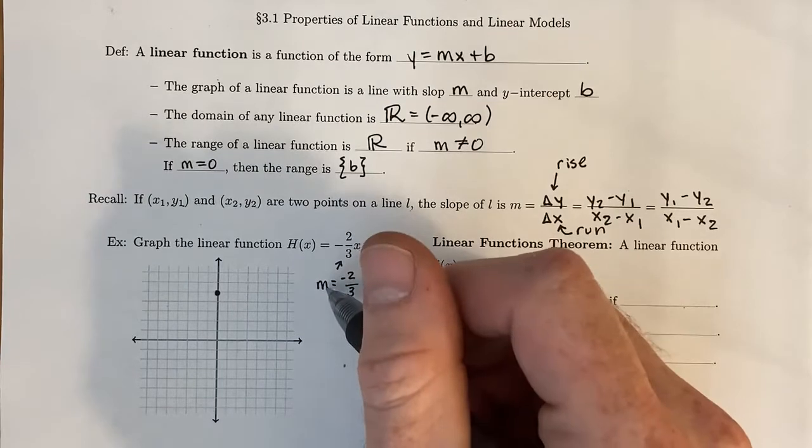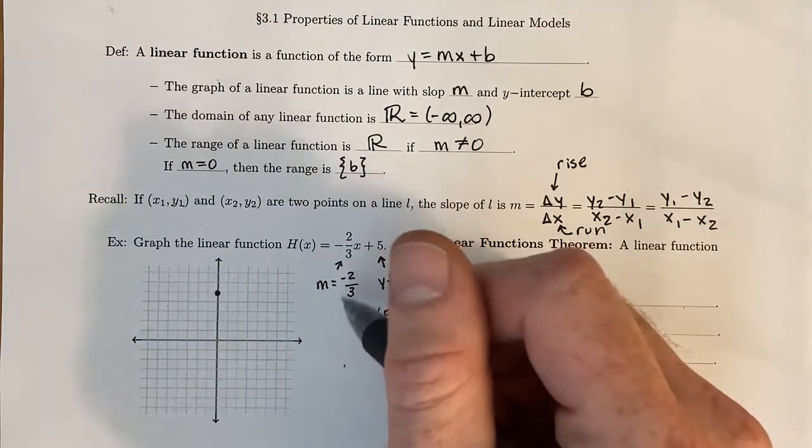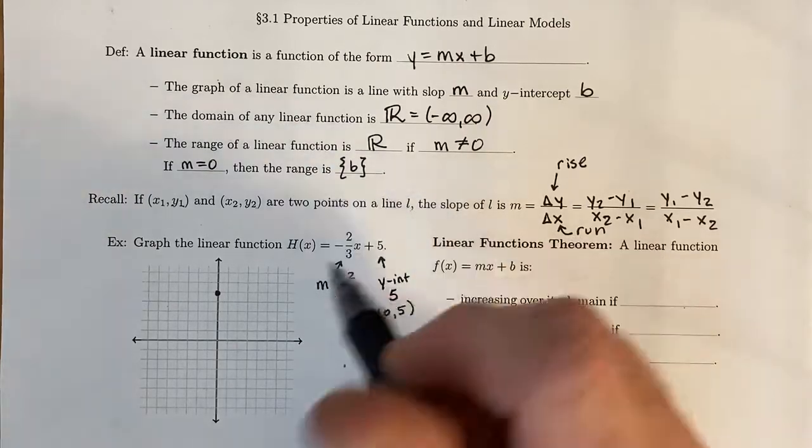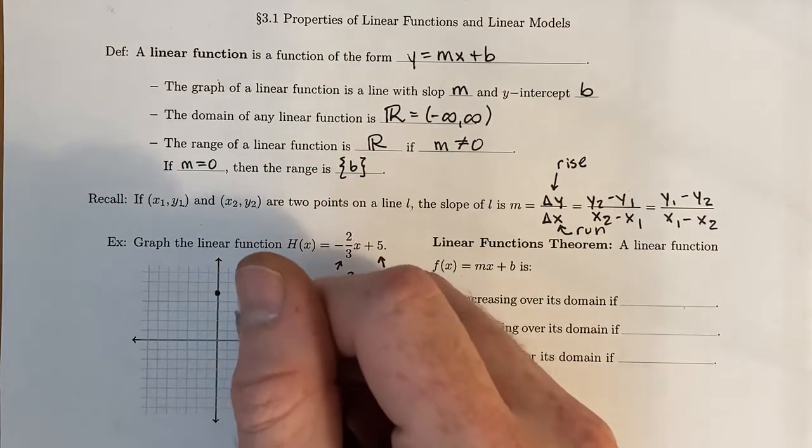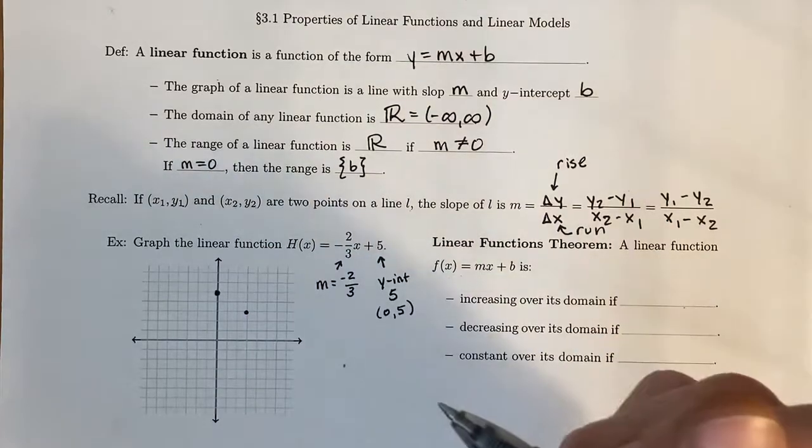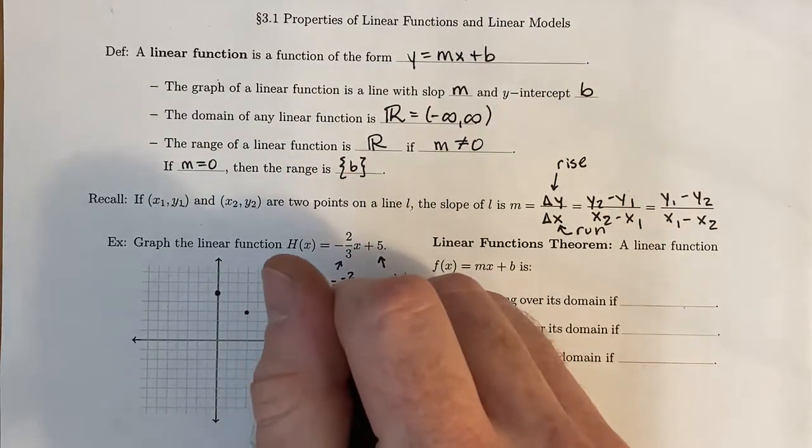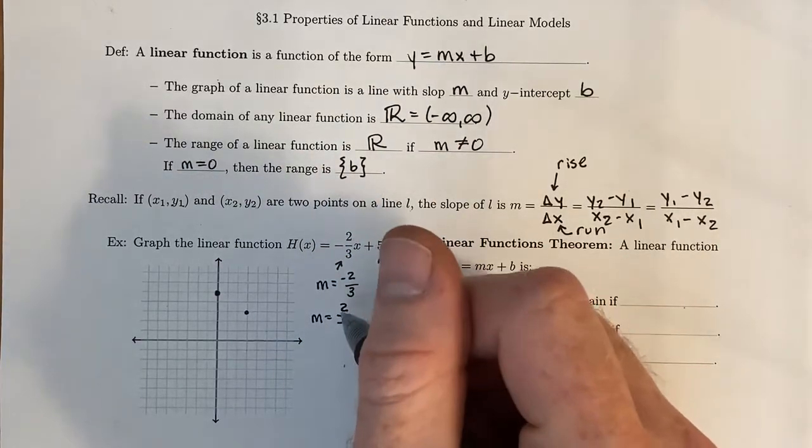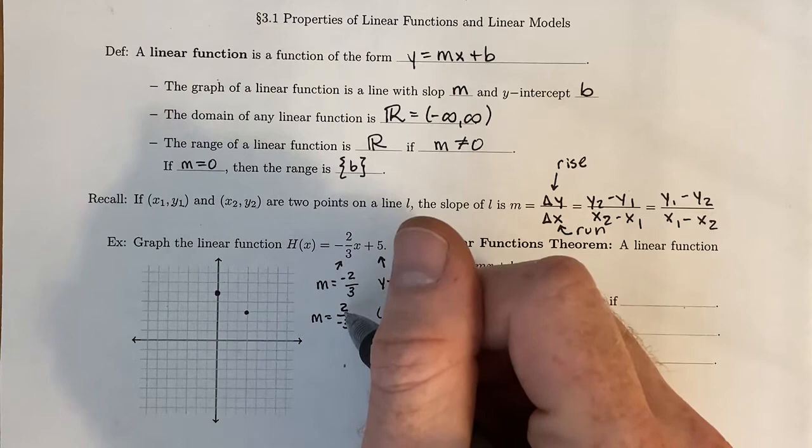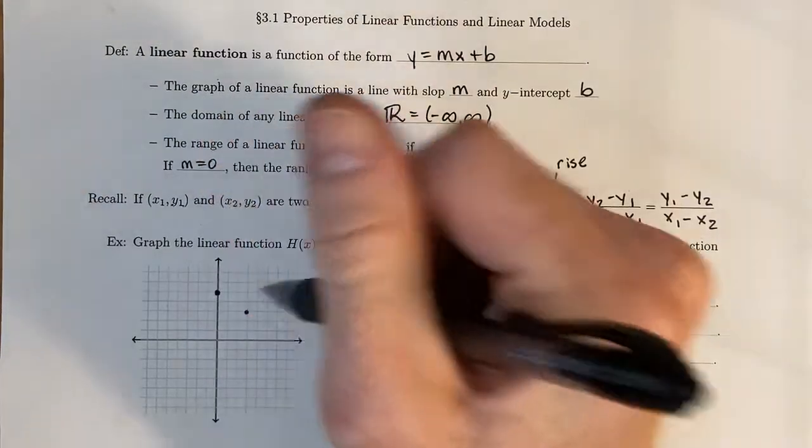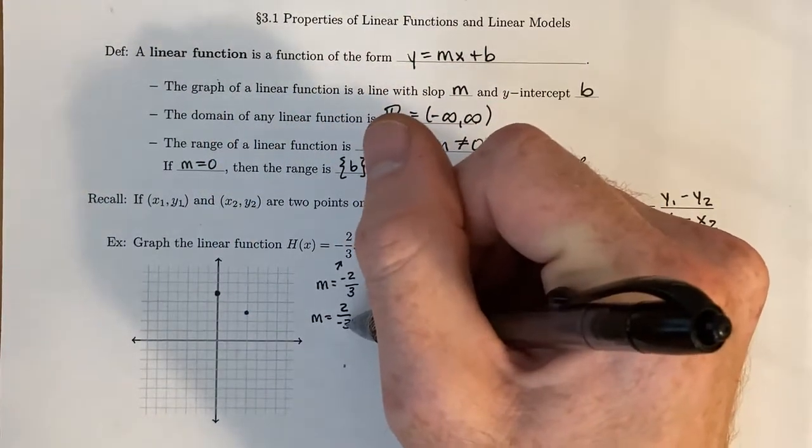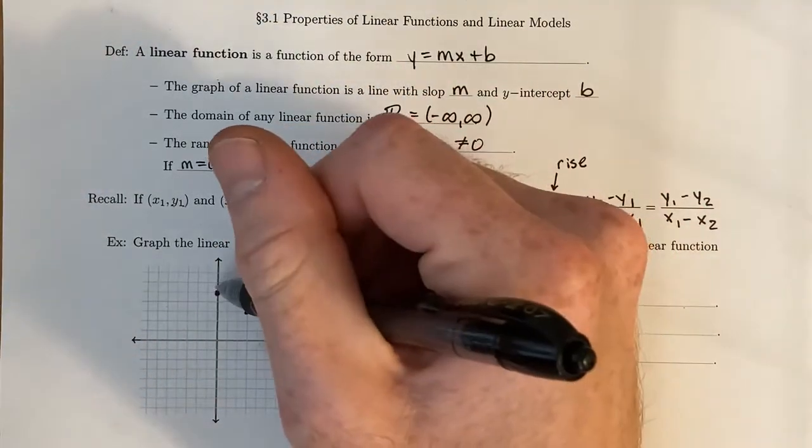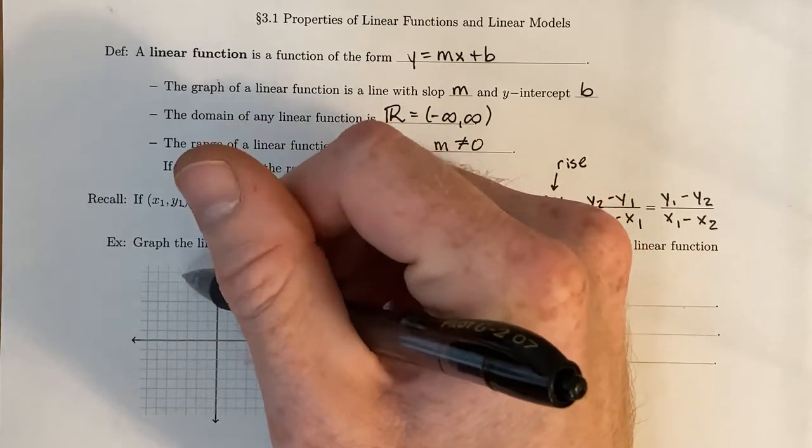Now for the slope, there's a couple different ways to interpret this. You can think of this as negative 2 over 3, which means you go down 2 for every 3 to the right you go. Or if you push the negative to the denominator, you go up 2 for every 3 to the left you go. Right, because that's the negative 3 is indicating that you move left instead of right. So you go up 1, 2 to the left 1, 2, 3.